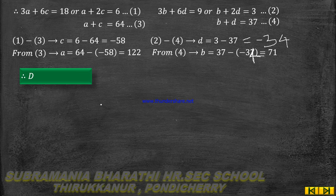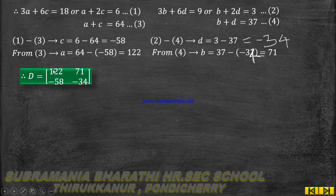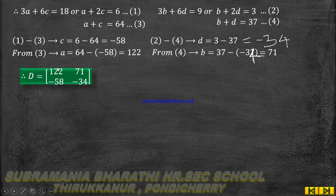So Matrix D is: 1st row a 122, b 71; 2nd row c minus 58, d minus 34. Therefore Matrix D equals: 1st row 122, 71; 2nd row minus 58, minus 34.